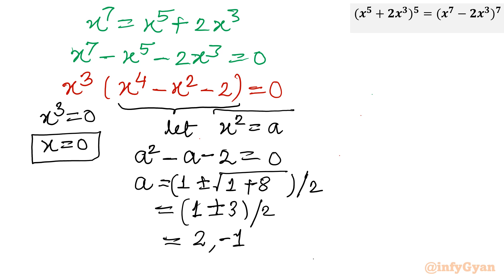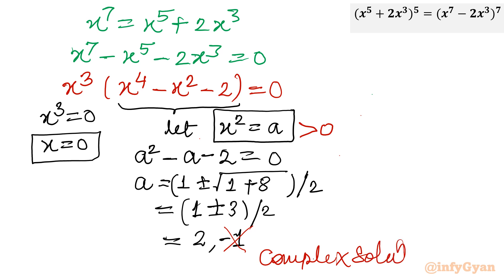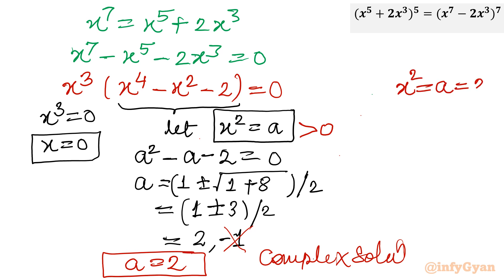Now, since we are finding real solutions, a = x² must be positive — x² cannot be negative for real x. So we reject a = -1 as it would generate complex solutions. The accepted solution is a = 2. Since a = x², we have x² = 2, and taking the square root: x = ±√2.